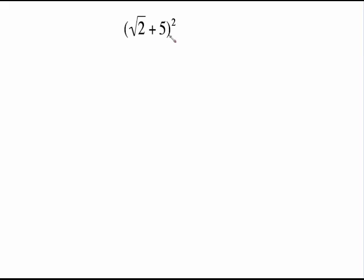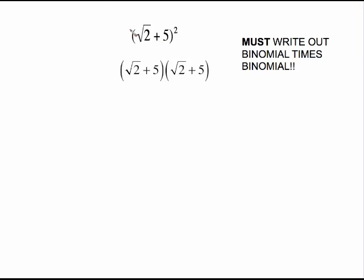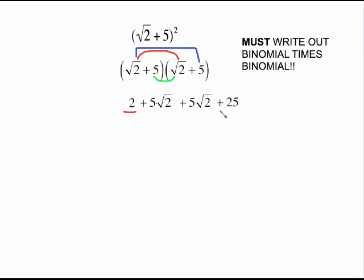This is (radical 2 plus 5) quantity squared. Be careful — a common mistake is to square the front, square the back, and think you're finished. When you square a binomial, you must write out the binomial twice: that squared means that binomial times that binomial. Once you write it out, it's just a FOIL problem. Square root of 2 times square root of 2 is 2; square root of 2 times 5 gives 5 radical 2; the inside gives another 5 radical 2; and the last is 5 times 5 is 25. Combining like terms, 2 and 25 give 27, and the middle terms give 10 radical 2, for a final answer of 27 plus 10 radical 2.